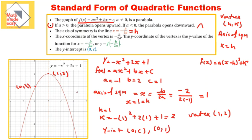One more thing to notice: is a greater than 0 or less than 0? Well, a is negative 1, so a is less than 0. If a is less than 0, the parabola opens downwards — which it does — and that makes the vertex a maximum value. So this vertex is the maximum value, meaning the y-coordinate of the vertex, which is 2, is the maximum value of y for the whole function. For domain and range: the domain is from negative infinity to infinity, but the range will be from negative infinity up to 2.